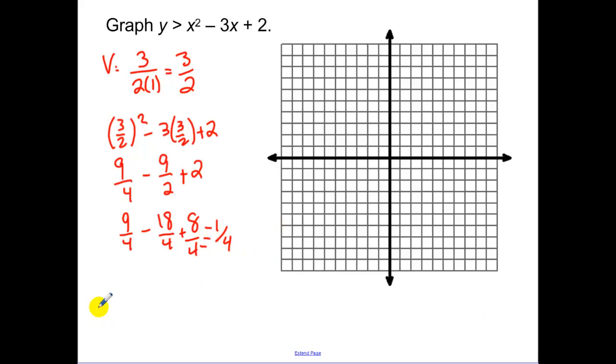So simplifying that, we get a positive 1 fourth. Actually, I get a negative 1 fourth. In order to find where this point is, I'm going to go by units of 1 fourth, since my vertex is a negative 1 fourth. So I'm going to go that is 1, and that's 2, that's negative 1, that's negative 2.